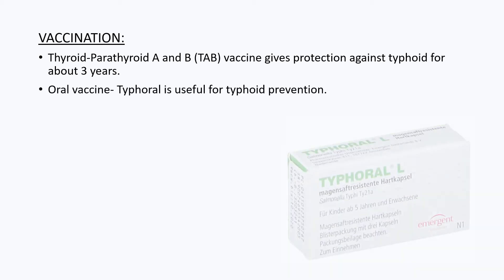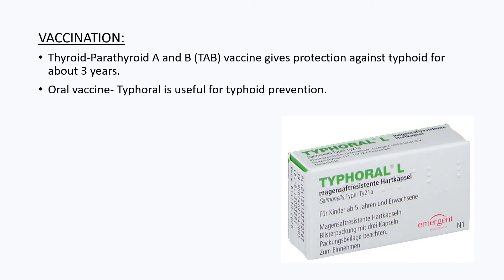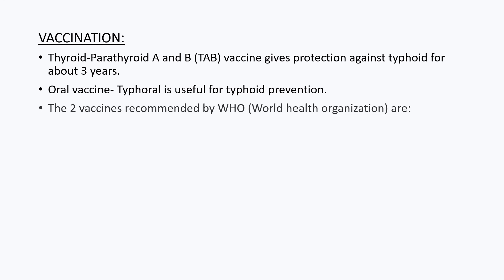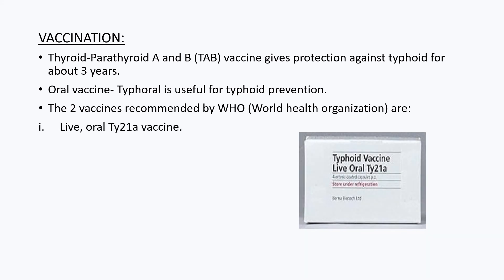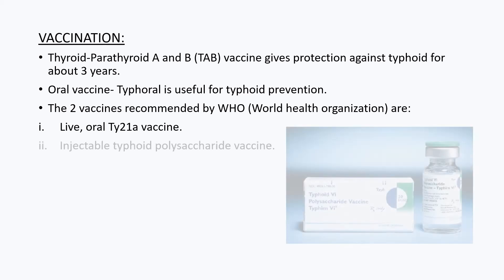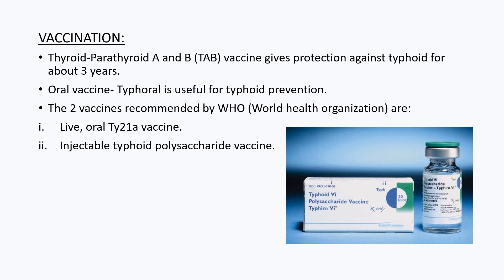An oral vaccine, typhorol, is useful for typhoid prevention. The two vaccines recommended by WHO, the World Health Organization, are: first, a live oral Ty-21a vaccine, and second, an injectable typhoid polysaccharide vaccine.